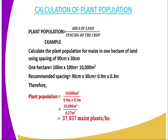To calculate the plant population, you multiply the spacing. The spacing in this question is 90 cm × 30 cm. Convert 90 cm to meters by dividing by 100: you get 0.9 meters. Then multiply by 0.3 meters, since 30 cm divided by 100 gives 0.3 meters. So 0.9 × 0.3 = 0.27 square meters. The area of the land is 10,000 square meters. Therefore, divide 10,000 by 0.27, and the plant population for maize becomes 37,037 maize plants in that particular hectare of land.